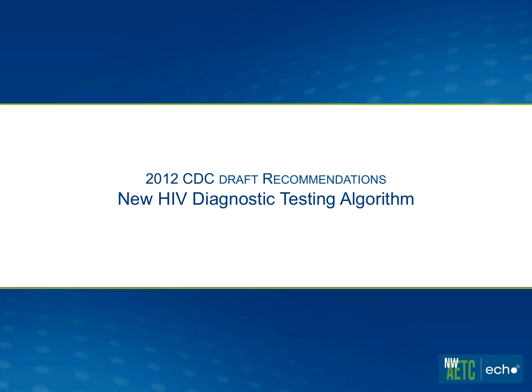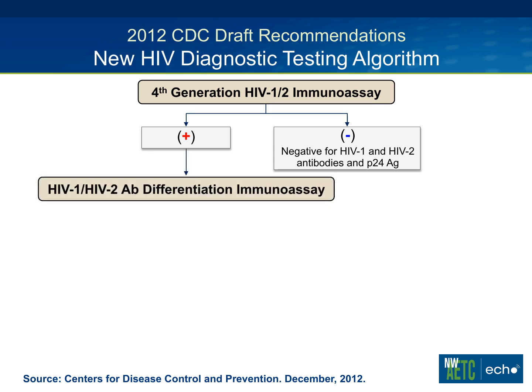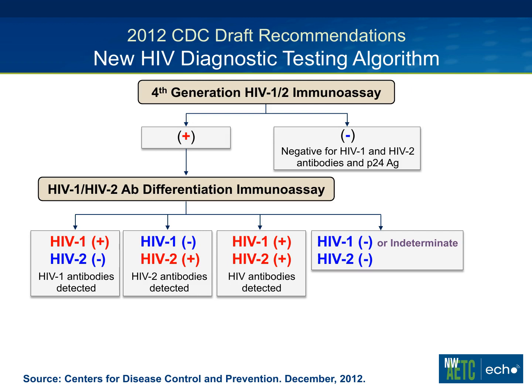To walk through the testing algorithm: you start with the fourth-generation HIV-1/2 immunoassay. It detects early infection fairly well but does not differentiate HIV-1 from HIV-2. If that test is negative, you're essentially done for that immediate testing unless the person had a very recent exposure. If it's positive, you move on to the differentiation assay to sort out HIV-1 versus HIV-2. If you get HIV-1 positive and HIV-2 negative on the differentiation assay, you have a positive confirmatory test — two tests showing clear HIV infection — and that is considered diagnostic for HIV.